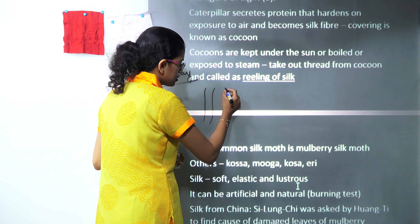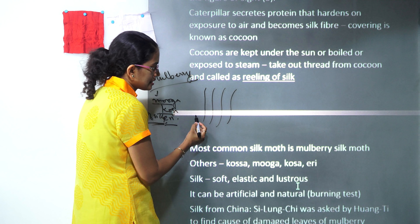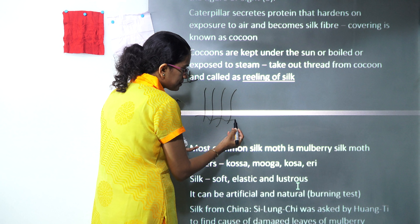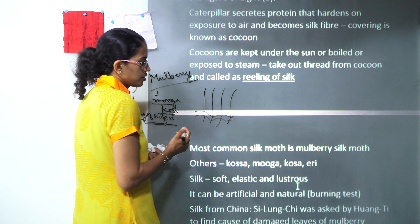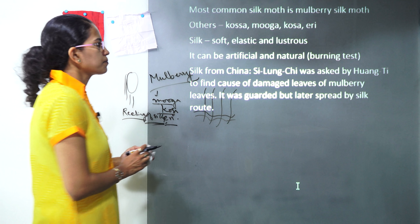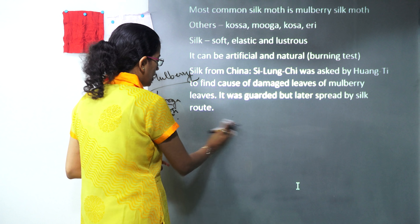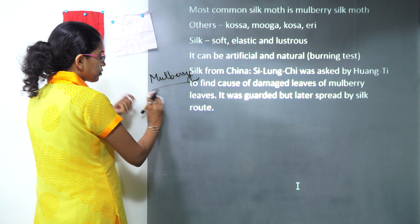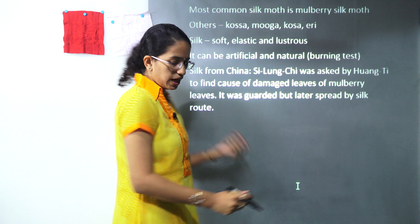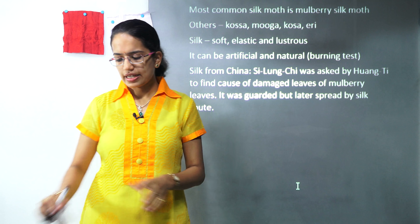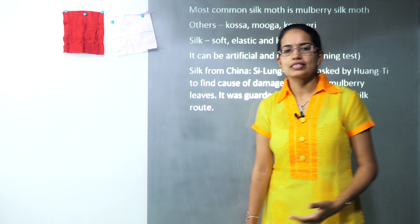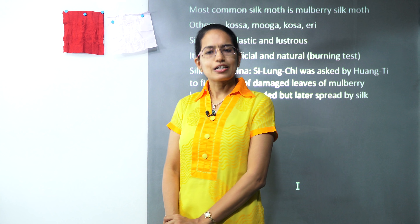When weaving, you have threads going alternately up and over the other threads, and similarly all threads are interwoven in this fashion until a cloth is weaved. As mentioned, silk can be both artificial and natural — if you burn natural silk you can clearly understand the difference between natural and artificial silk. With this we cover our third lecture on science. We will continue science lectures in upcoming classes. Stay tuned and do subscribe to the channel.